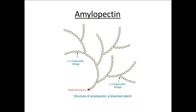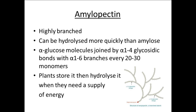The 1-6 glycosidic bonds give it a much more branched structure, and the fact that it is more branched means that you can quickly cleave off one of the glucoses so it can be used in respiration quickly. Amylopectin is hugely branched and you can hydrolyze it much more quickly.